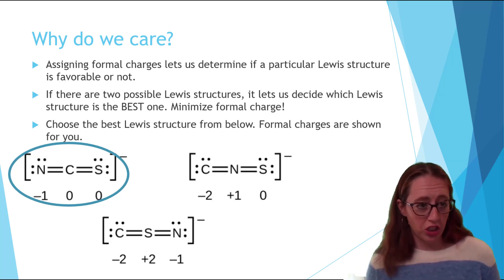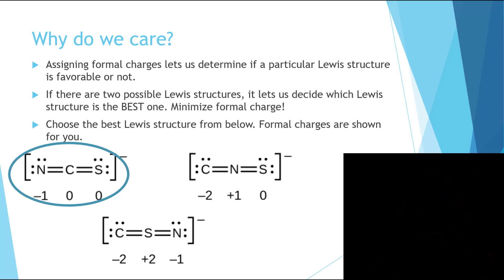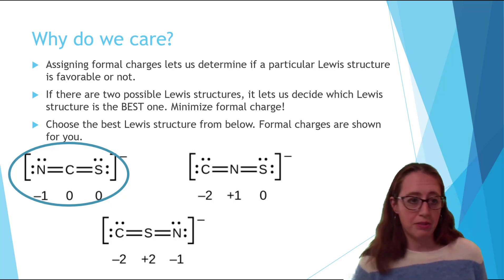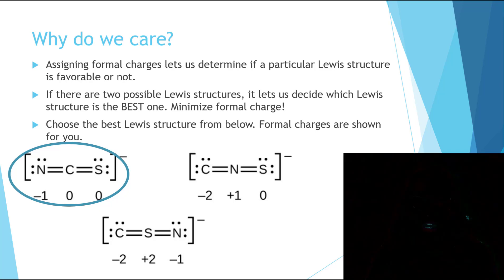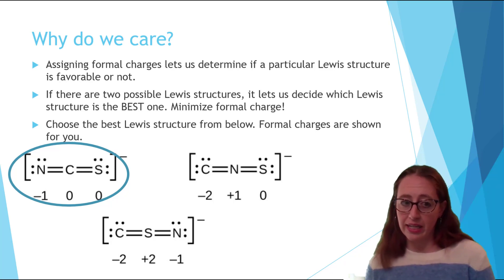Generally when you get formal charges, if possible, you want to put negative charges on more electronegative species. And you want to put positive charges on less electronegative species. And so in some of these cases you might get a choice on where you put the formal charge. Negative formal charges go on electronegative species. Positive formal charges go on less electronegative species.